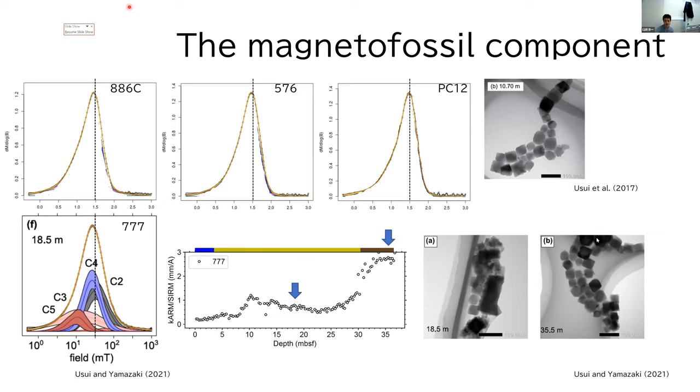So I propose that pelagic red clay contain a single magnetofossil component coming from these equant octahedral magnetite. As I emphasized, I propose this as a first-order feature, and I will also discuss some exceptions later in this talk.